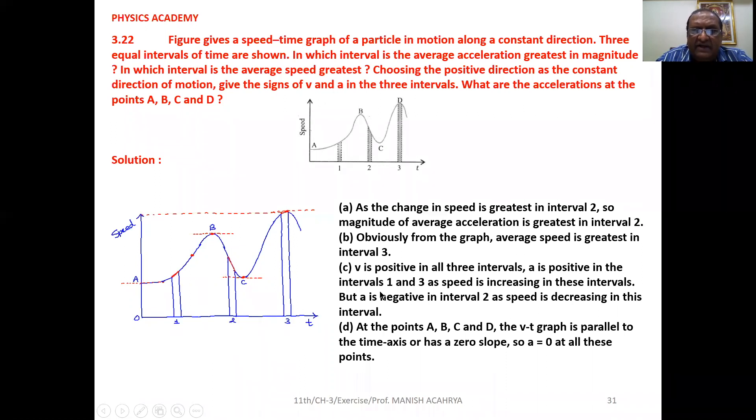a is positive in intervals 1 and 3 because if we find the slope in intervals 1 and 3, the slope will be positive. But in interval 2, if we find the slope of this graph, it is negative. So acceleration is negative in the second time interval.